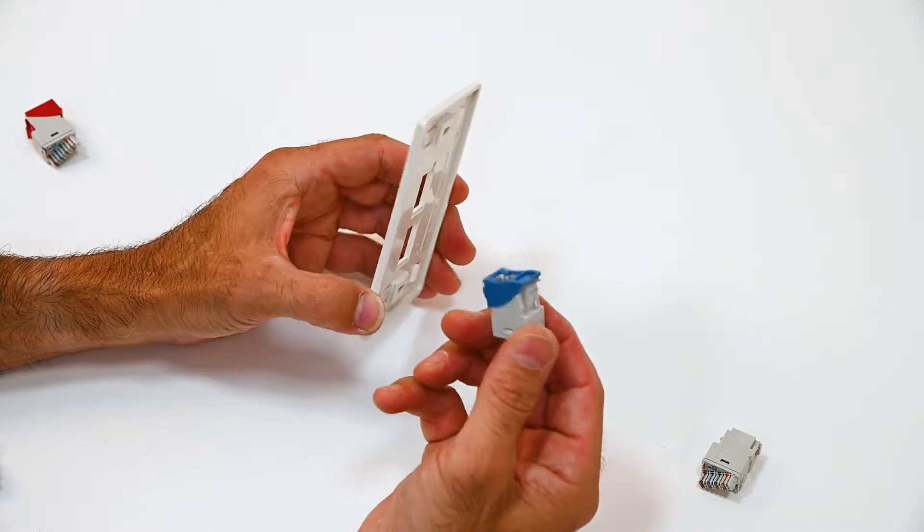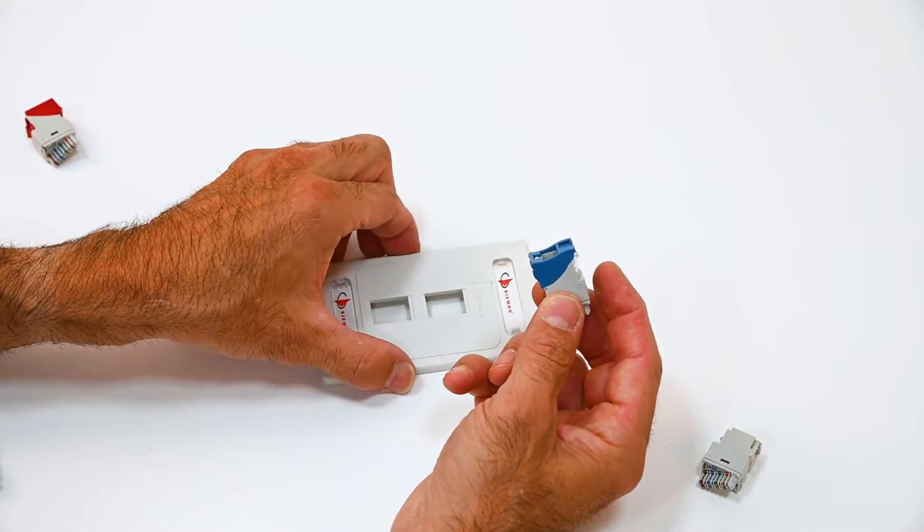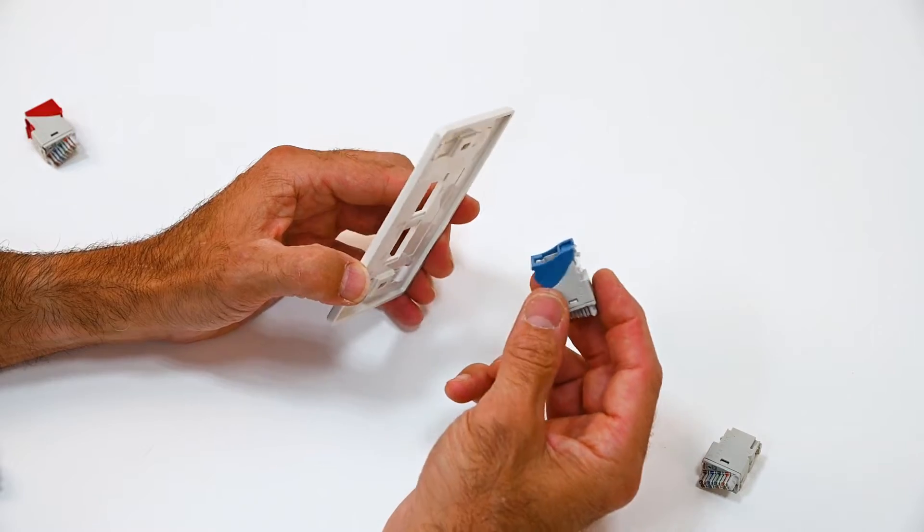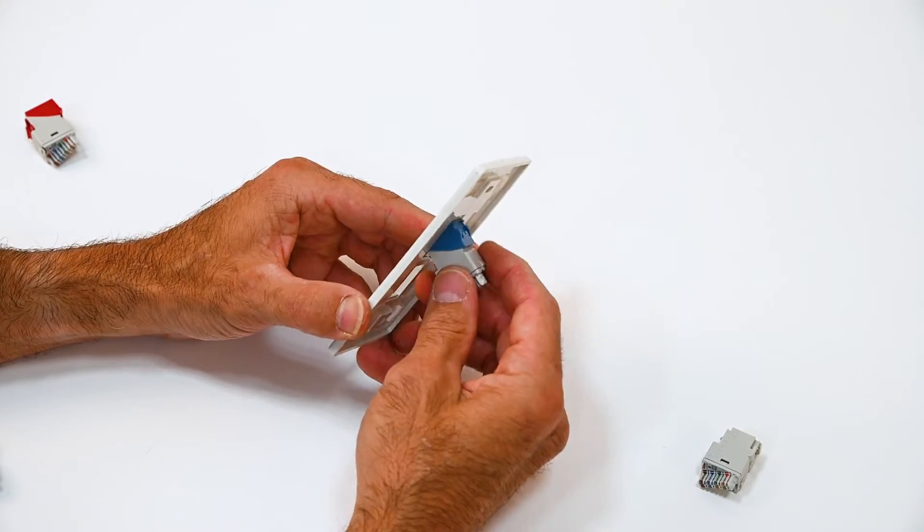So the nice feature of this jack is if you're familiar with our Z-Max you'll notice that the front end is identical to the Z-Max. And this hybrid style allows you to mount into a faceplate in both flat or angled orientation.